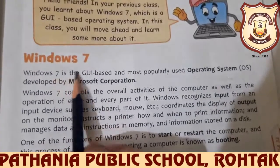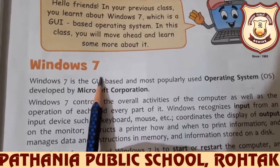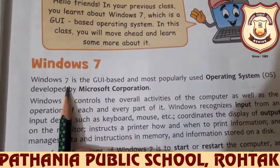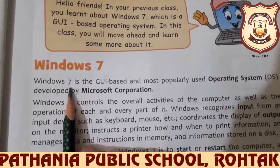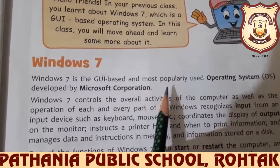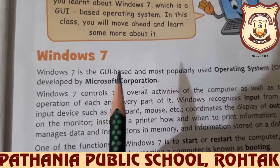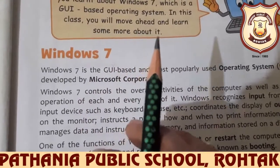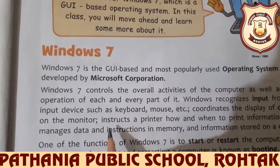First we will discuss about Windows 7. As you have already studied in class 3, Windows is an operating system. Windows 7 is a version of an operating system. It is the most used operating system all around the world. It is easy to use, most popular, and it is developed by Microsoft Corporation. The operating system controls all the overall activities, functions, and operations of your computer and each and every part.